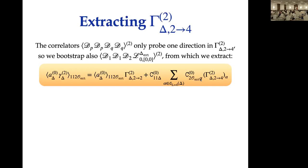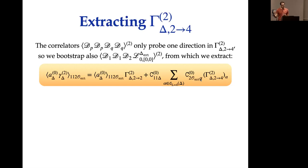Final question on whether the number of correlators needed grows at higher orders: Yes. At one loop we need the entries connecting length two with length two and length two with length four, but at the next order we also need to include length six, explicitly constructing those operators and computing OPE coefficients. This will be significantly harder.